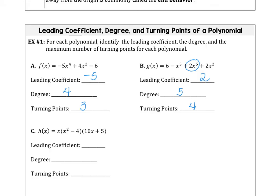In part C, you have to think about this a little bit. To get the leading coefficient, we multiply x times x squared times 10x, which gives us a leading term of 10x to the fourth power. So the leading coefficient is 10, the degree is 4, and the number of turning points is 3.